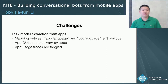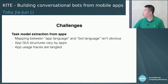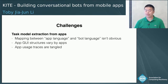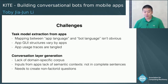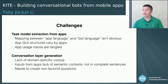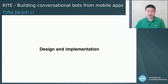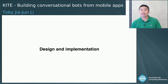The approach used in Kite brings some unique challenges. The GUI structures of different apps vary a lot. Traces collected are often tangled, making it hard to extract a task model in bot languages from apps. When generating a conversational layer, we also face a lack of domain-specific corpus, a lack of semantic context in the inputs from apps, and the need to generate non-factual questions in conversations.